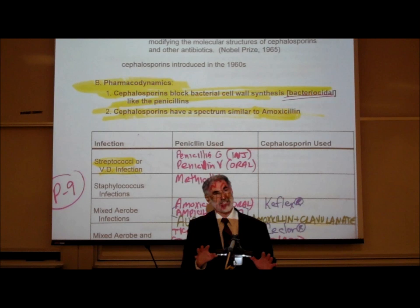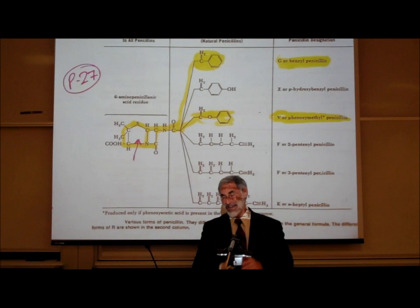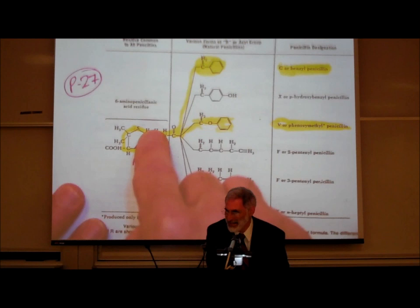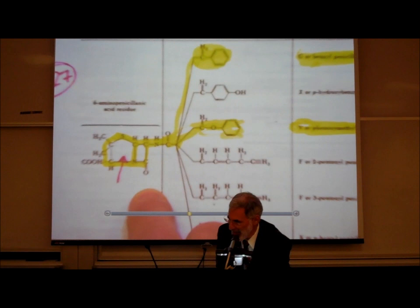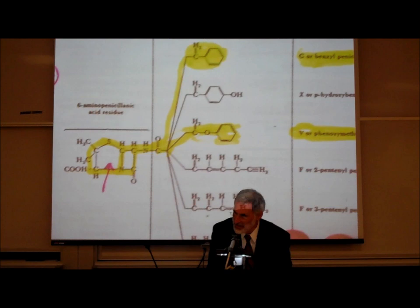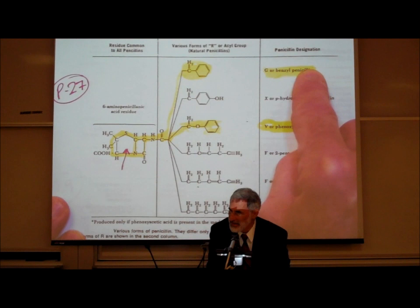The cephalosporins are very similar to penicillins. If you look at page P27, this shows the molecular structure of penicillin. Penicillin looks like a house with an attached garage, and then it has side chains. Penicillin G is basically this house, this attached garage, and this side chain. When they change that side chain, that's called penicillin V, and that's the one that's effective orally. Penicillin G is given by injection; penicillin V works orally.